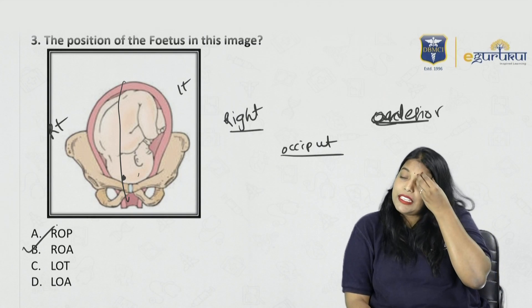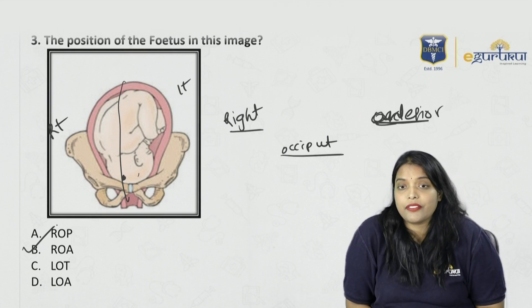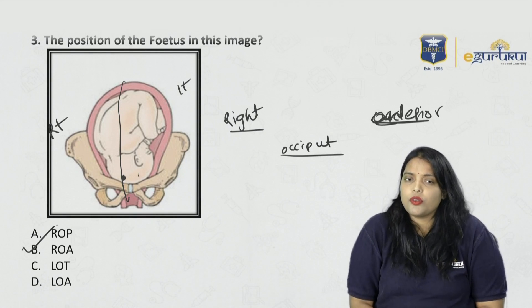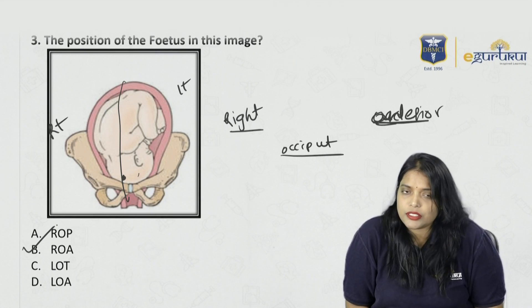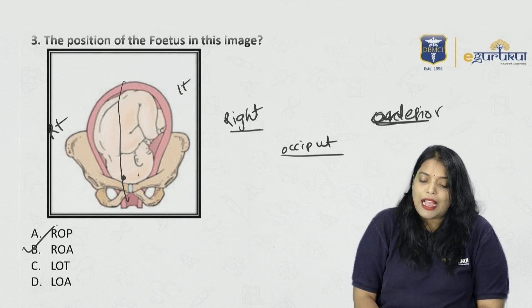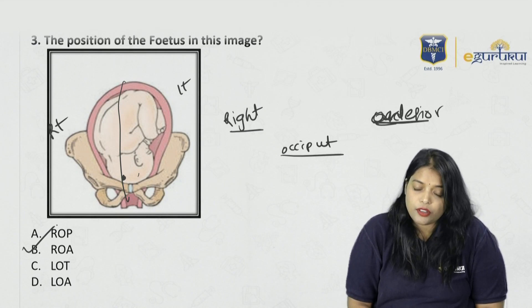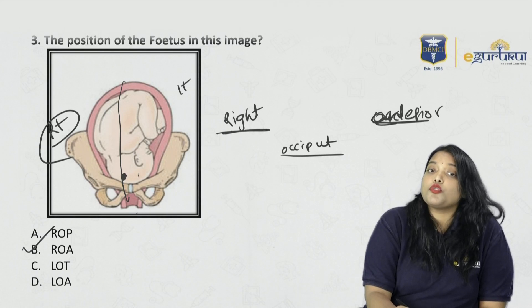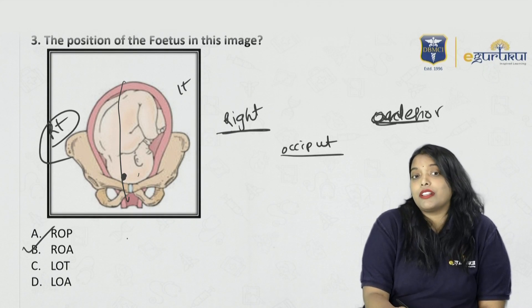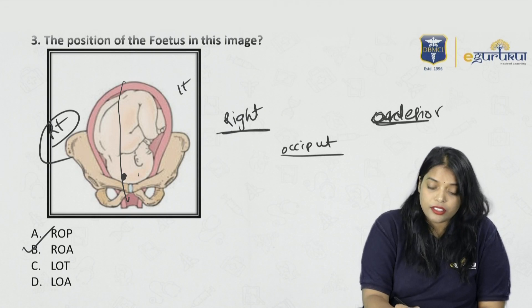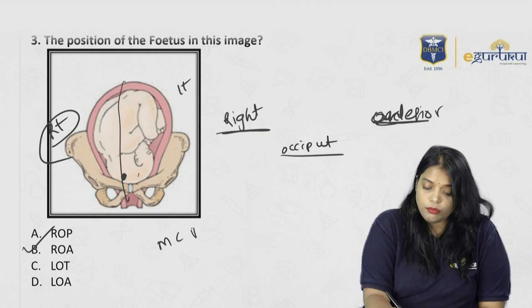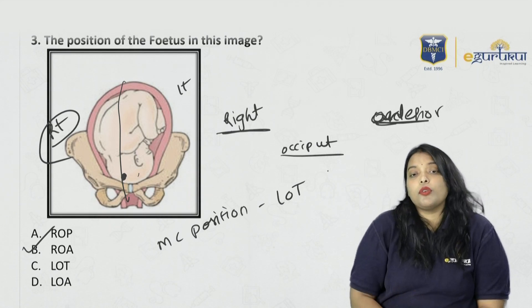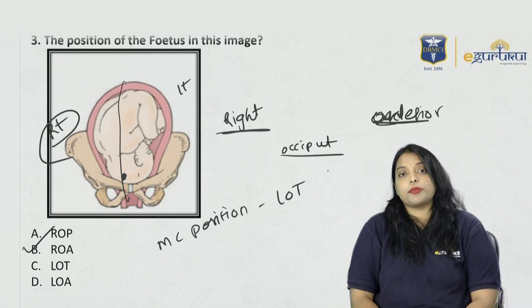So this is Right Occipito Anterior. For a detailed explanation, I recently released a YouTube video where we have done this image-based question. The denominator is occiput, which is on the right side, and as it is towards the pubic symphysis, we call it Right Occipital Anterior. Most common position overall is LOT — Left Occipital Transverse. Most common position in labor is LOA — Left Occipital Anterior.